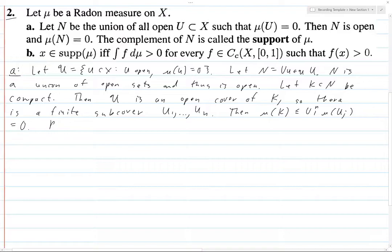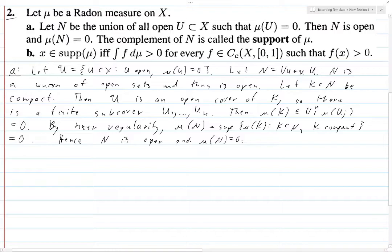So then, by inner regularity, U of N is the supremum for these things where K is compact. And that's just the supremum over a collection of things which are all 0, so it's just 0. Hence, N is open, and the measure of N equals 0.